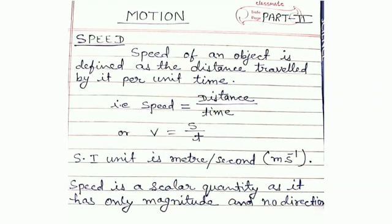So how can we define speed? Speed is defined as the distance travelled by the body per unit time. Mathematically we can write speed is equal to distance by time, that is V = S/T in symbol form. The SI unit of speed is meter per second. Speed is a scalar quantity as it has only magnitude and no direction.